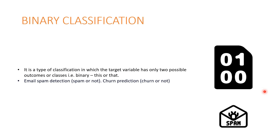We will start with binary classification. It is a simple type of classification in which the target variable has only two possible outcomes or classes — it has to be binary. A simple example would be email spam detection: it is spam or not. No intermediary, no other options.